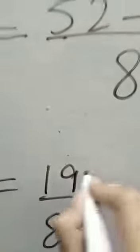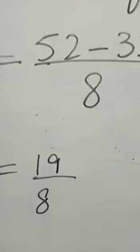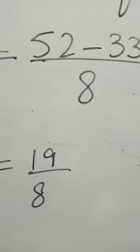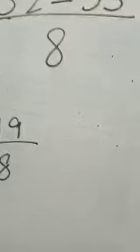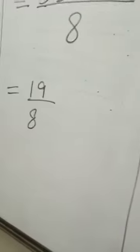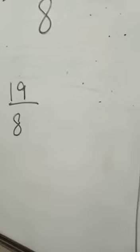Then it will be 19. Here we have 19 by 8 — the denominator is the same. Now when the number is greater, we will divide it.